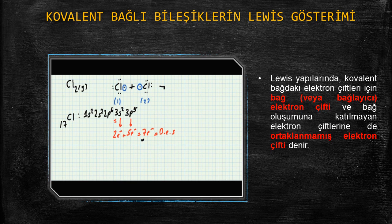Bunu nasıl göstereceğiz? Tekrardan elementin simgelerini yazıyoruz. Cl ile 2 tane nokta koyuyoruz. Bu 2 noktayı biraz daha yakınlaştırıyoruz. Bu 2 noktadan birisi bir klor atomunu, diğeri diğer klor atomunu temsil ediyor. Sonra kalan elektronları da aynen yazıyoruz. Şöyle de gösterebiliriz arkadaşlar. Yine Cl atomu.